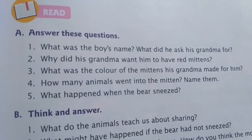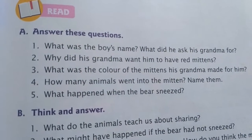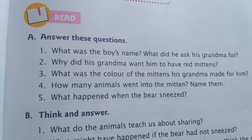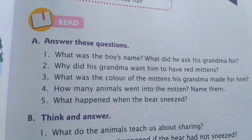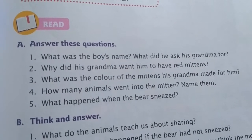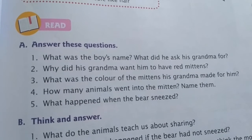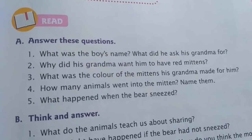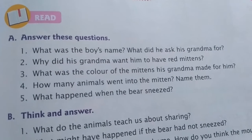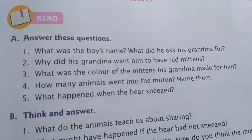The first part is 'Answer these questions.' Part A has some questions that we have to answer by understanding them and finding the answers from the chapter itself. The first question asks: what was the boy's name? They are asking about the name of the boy the story revolves around, and what did he ask his grandma for? What was his demand to his grandmother? Secondly, why did his grandmother want him to have red mittens? What was the reason?